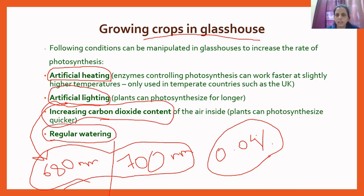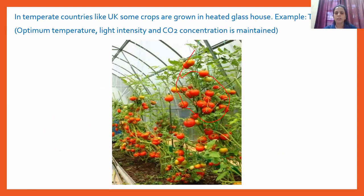Regular watering of plants is also done in glass houses. Increasing the carbon dioxide concentration and regular watering of plants helps provide two very important raw materials for photosynthesis: carbon dioxide gas and water. Here is a picture showing tomato plants grown in glass houses in temperate countries like the UK. The temperature outside is very cold, while inside the glass house the temperature is maintained by providing artificial heat, which increases enzyme activity in the tomato plant.